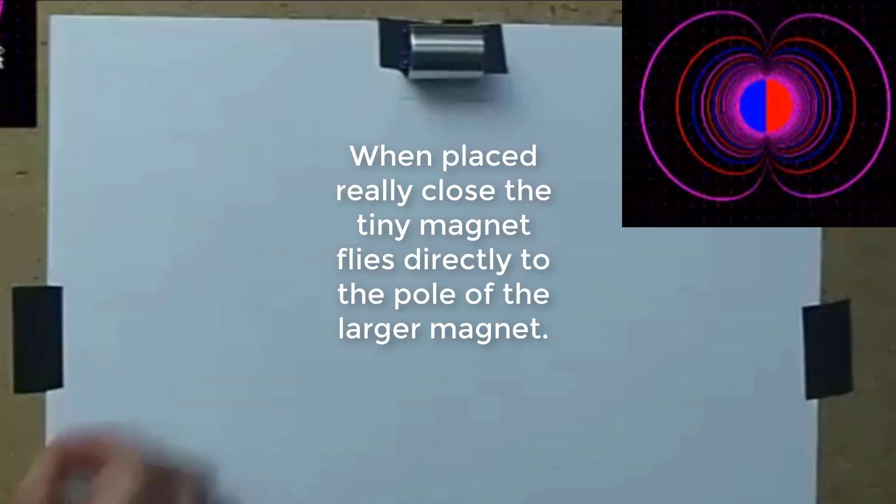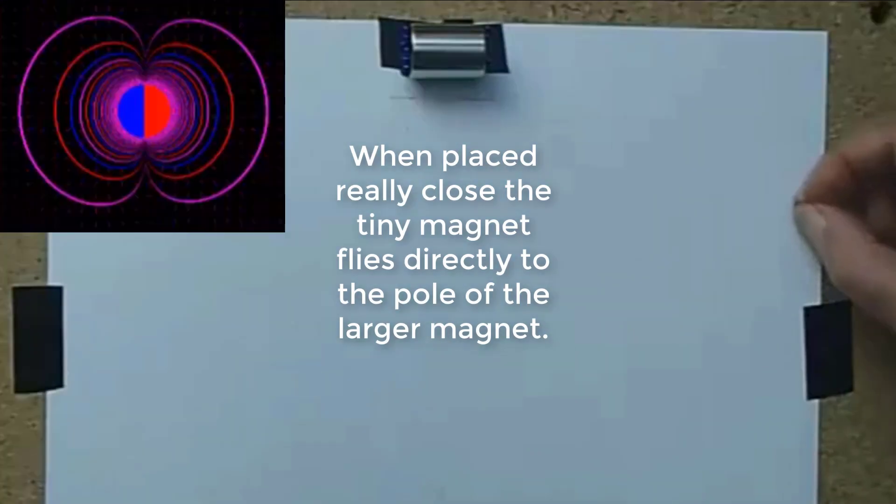When placed really close the tiny magnet flies directly to the pole of the larger magnet.